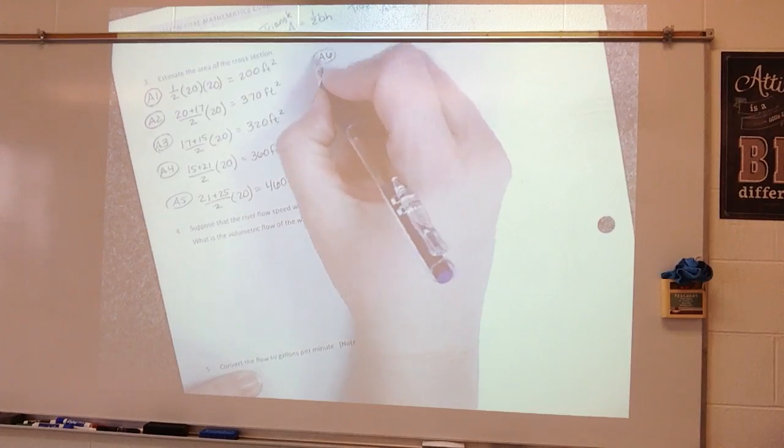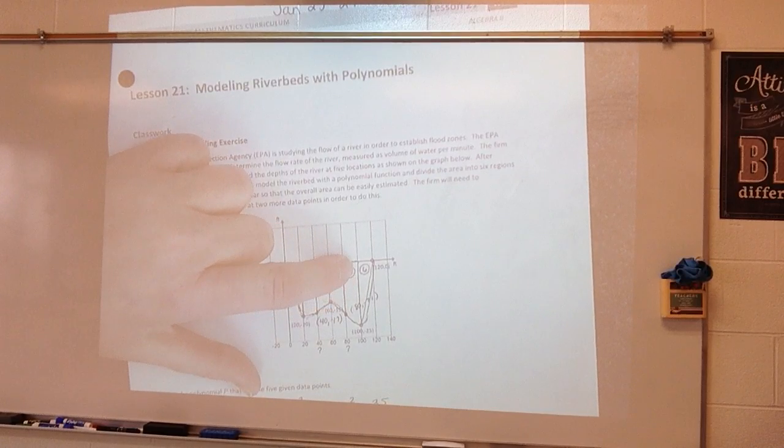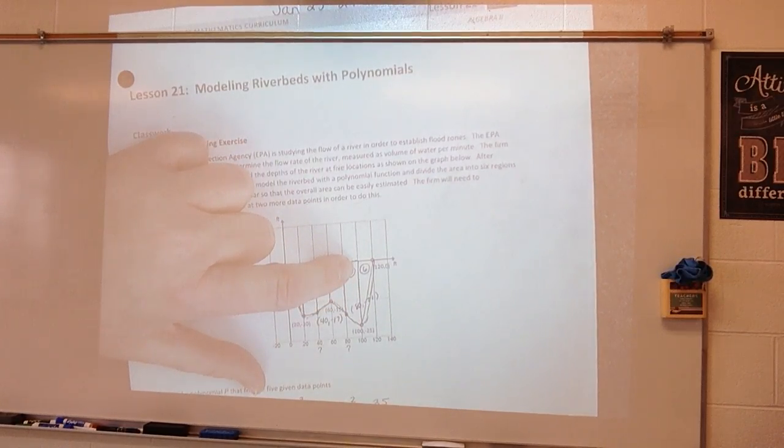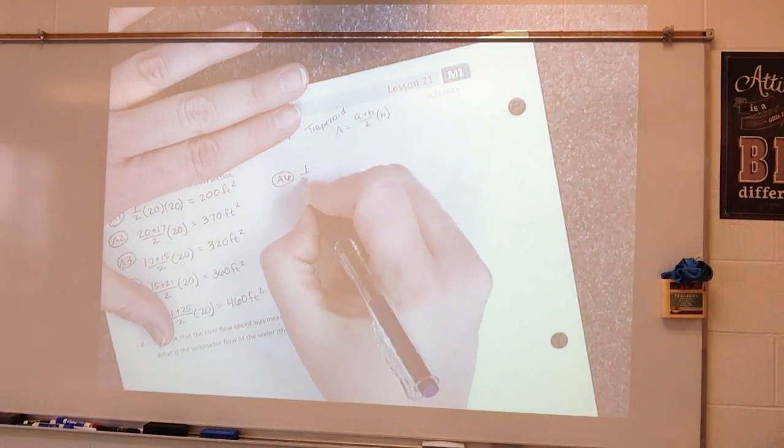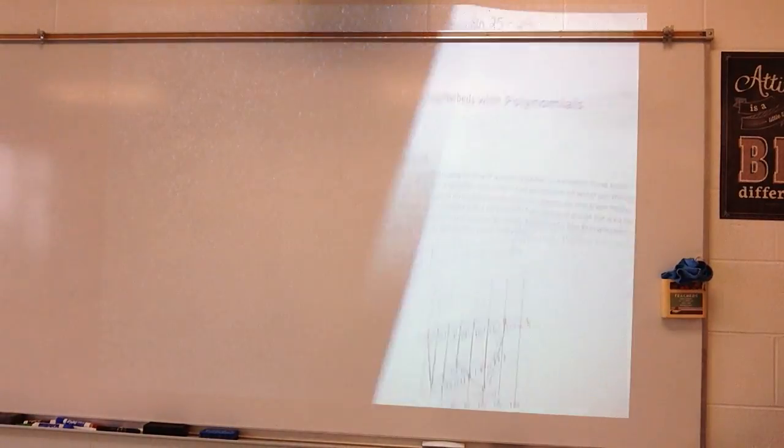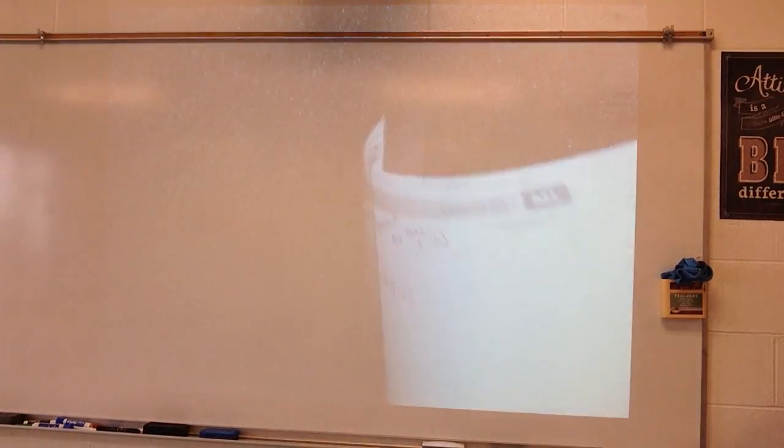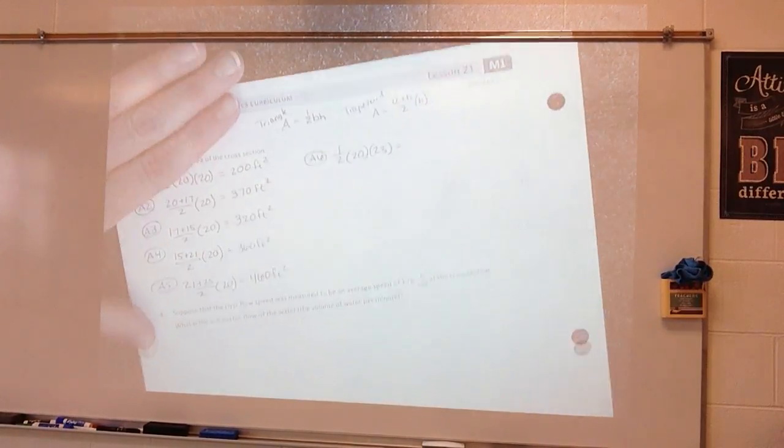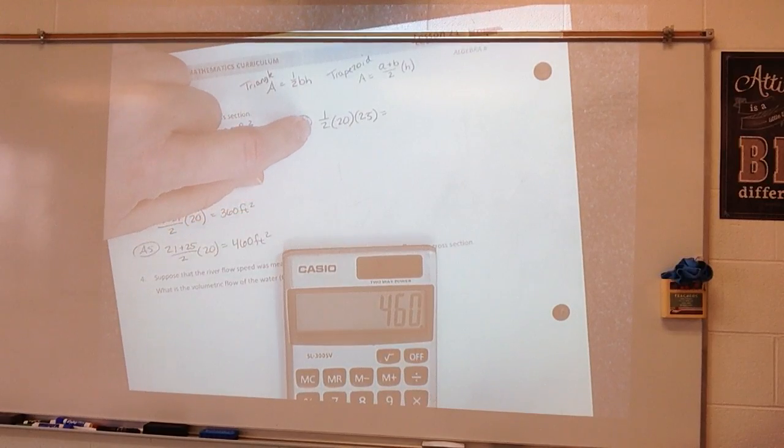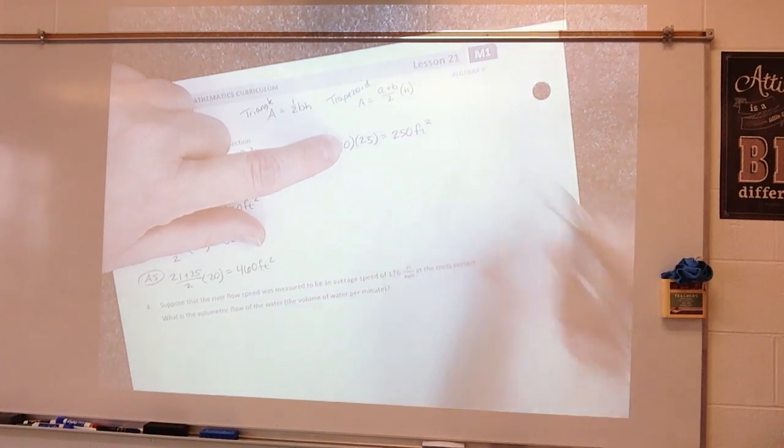And then the area of my sixth figure. That's my other triangle. So I'm going to do one half base. My base is 20 times my height. The height of my triangle is 25. So one half of 20 is 10 and 10 times 25 is 250 square feet.